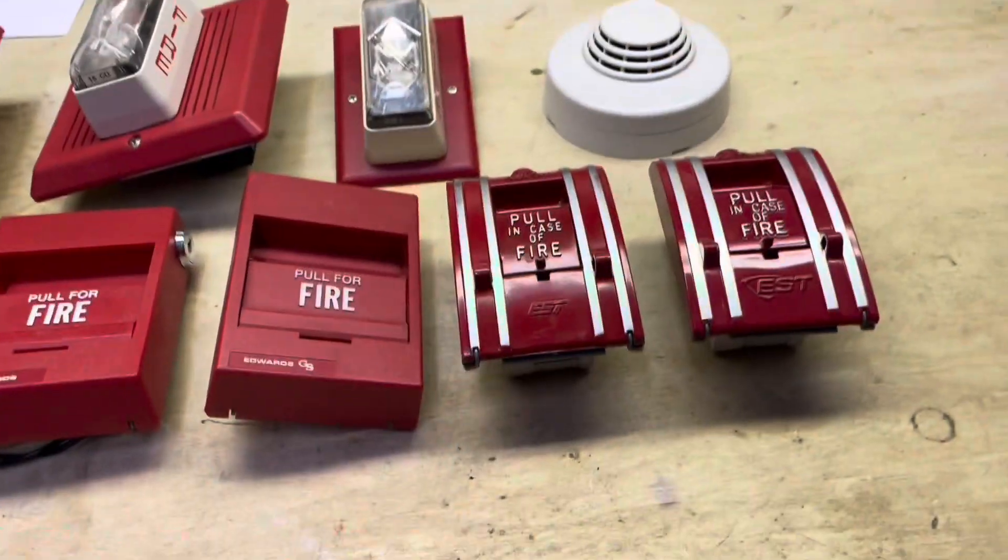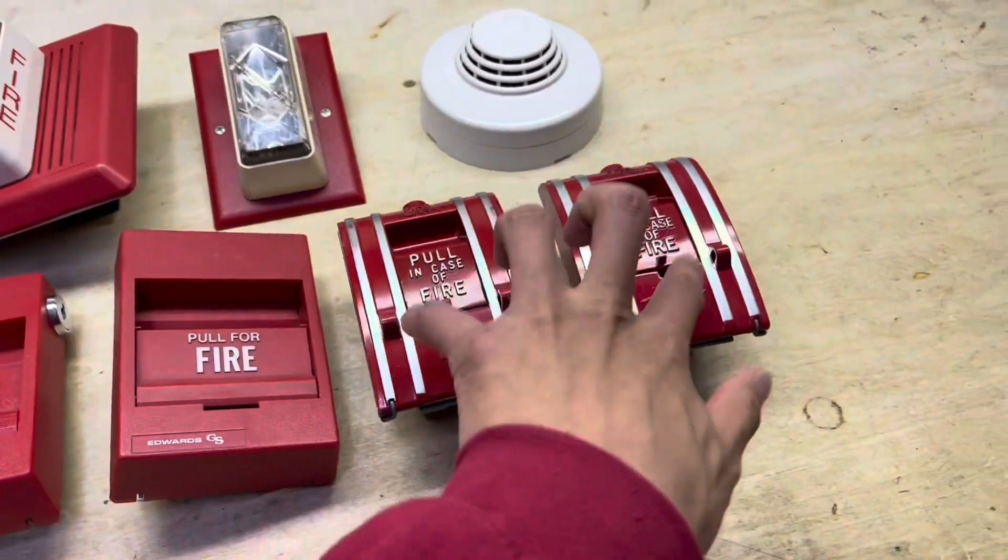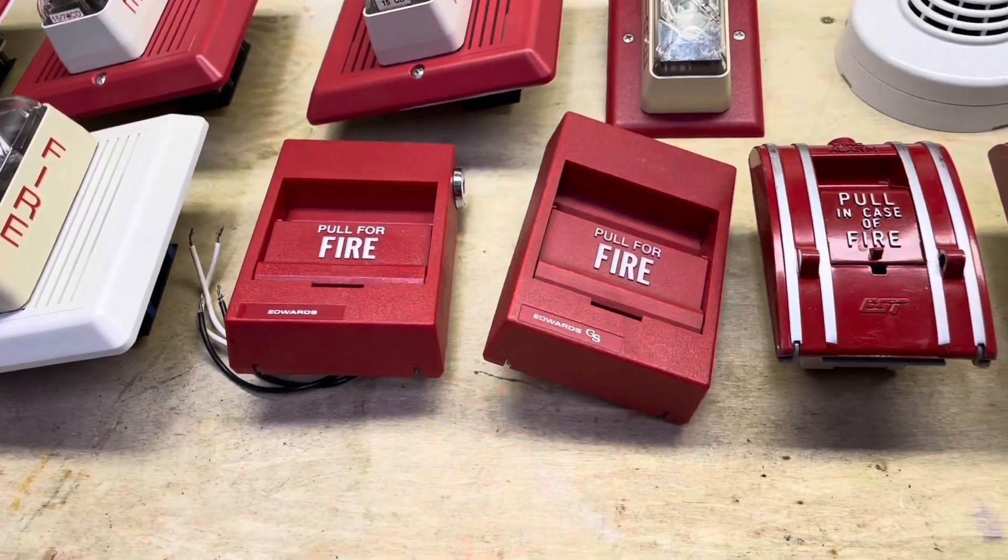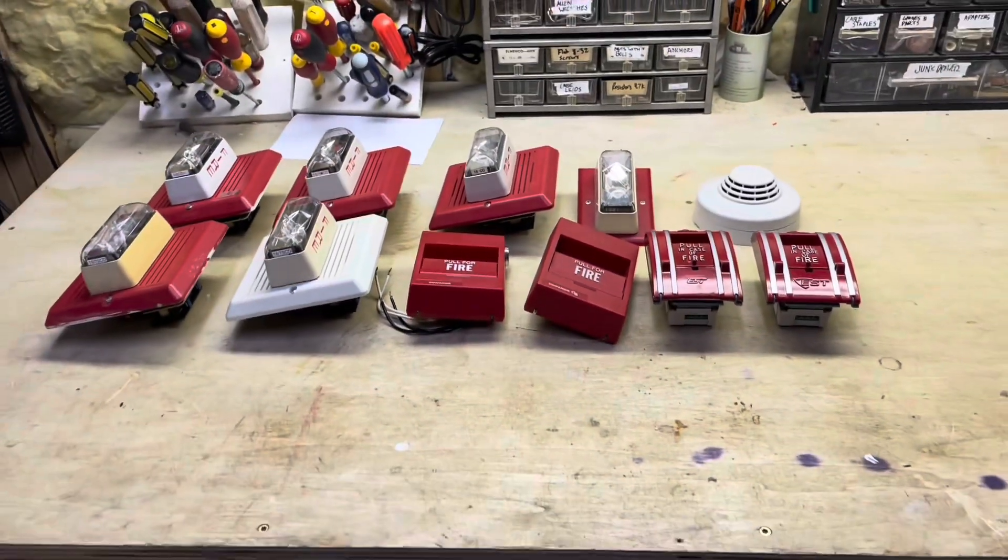Then of course I have a smoke detector, some pull stations. I have two of these metal 270 series pulls and then I have two of these more plastic ones. Let's go ahead and get installing.